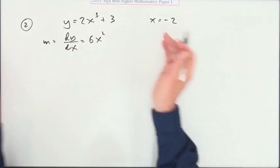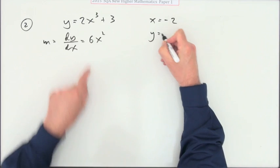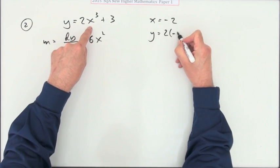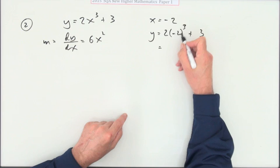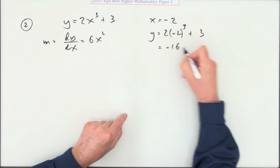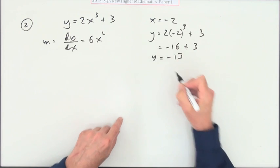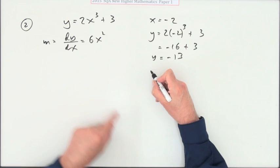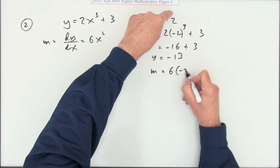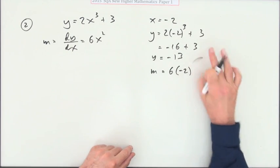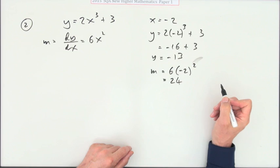Now if that's the x-coordinate, what's the y-coordinate? It'll be 2 times the x-coordinate cubed plus 3. Negative 2 cubed is negative 8, so that's negative 16 plus 3, so that's negative 13 for the y-coordinate. And what's the gradient? That's 6 times the x-coordinate which is negative 2 squared, so that's 6 times 4, so that's a big 24.